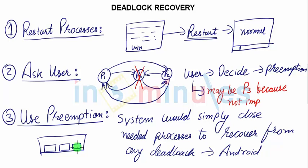So to recover from a deadlock we have three basic options: restarting all processes; asking the user so the user can decide whom to terminate; or allowing the system to automatically close the needed processes so that other processes can survive. Thank you for watching this video.